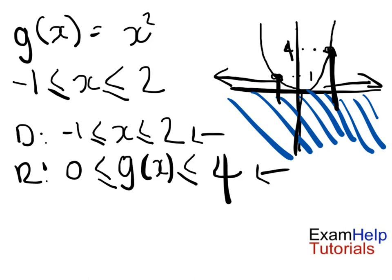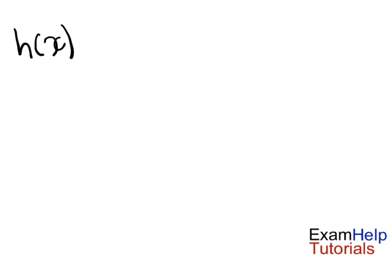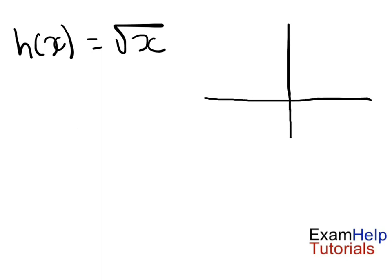Let's do another slightly harder example: h of x equal to the square root of x. Drawing that graph — square root of 0 is 0, you can't square root a negative number so it doesn't go to the left. It goes to the right, getting slower and slower as the slope becomes less steep. So this is our square root of x graph.